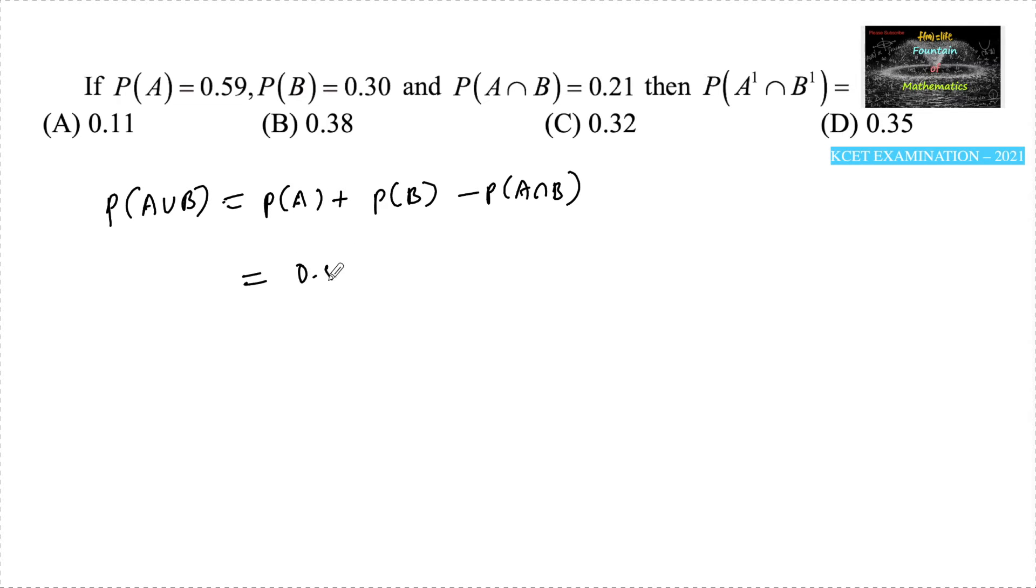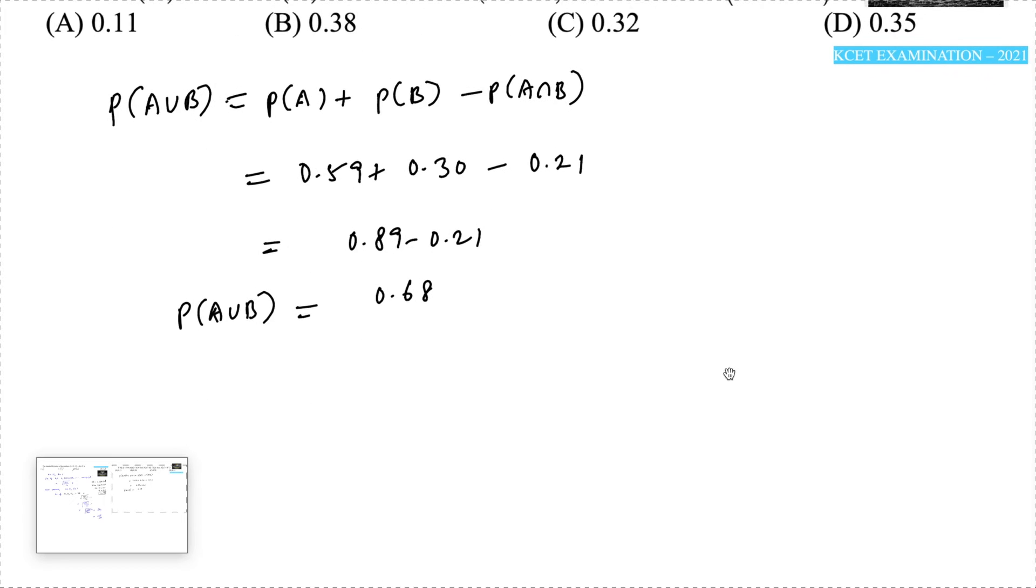P(A) is 0.59, P(B) is 0.30, minus P(A intersection B) is 0.21. So we'll get 0.89 minus 0.21, which is equal to 0.68. So we got P(A union B) is equal to 0.68.